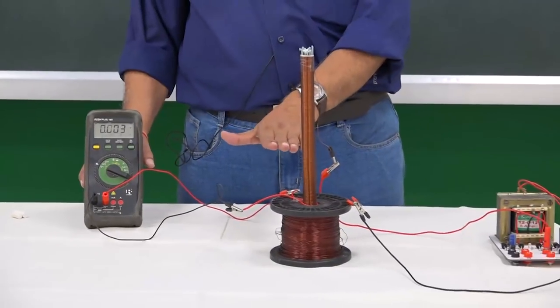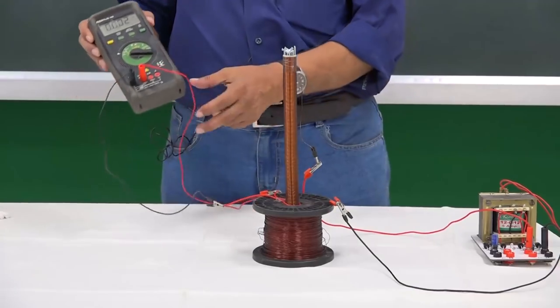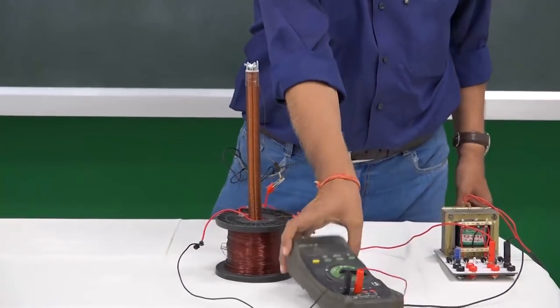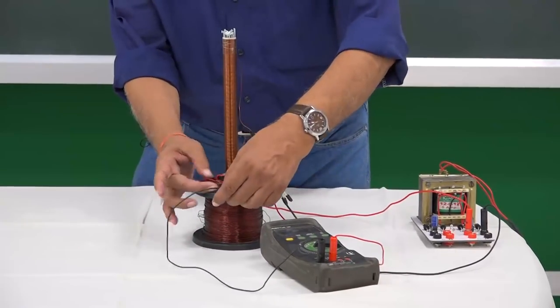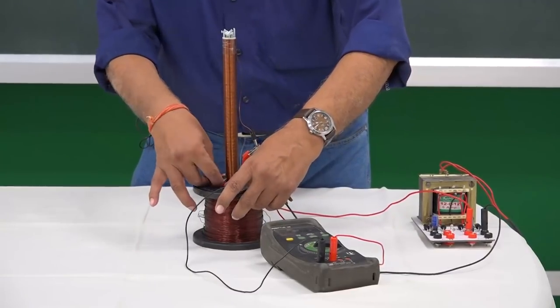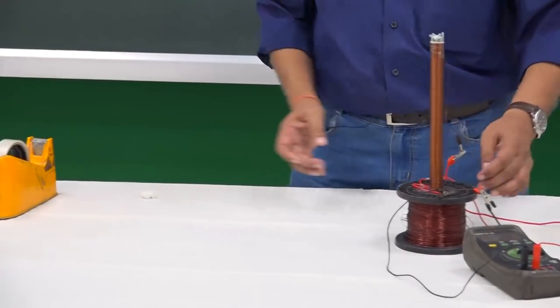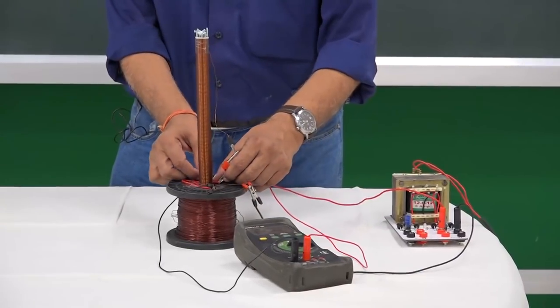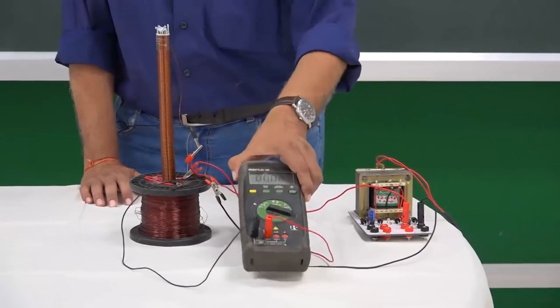Now without disturbing that loop, the tape is still there. I take this multimeter to the other side, and these wires which are here, let me put another tape to fix it. Now look at this multimeter once again.